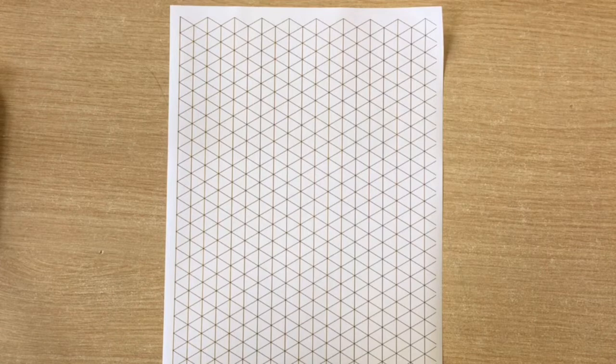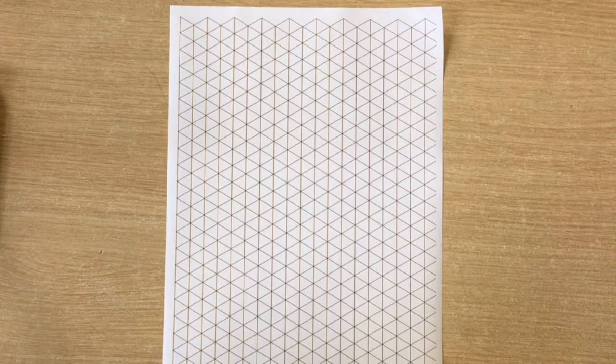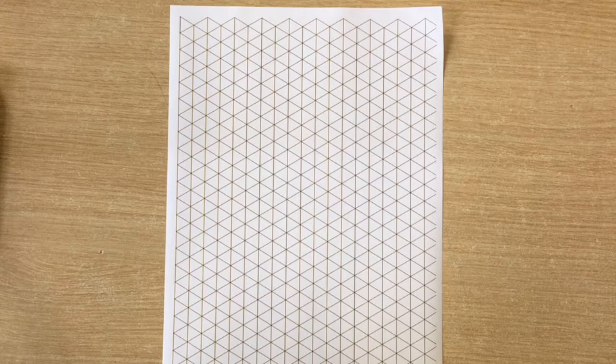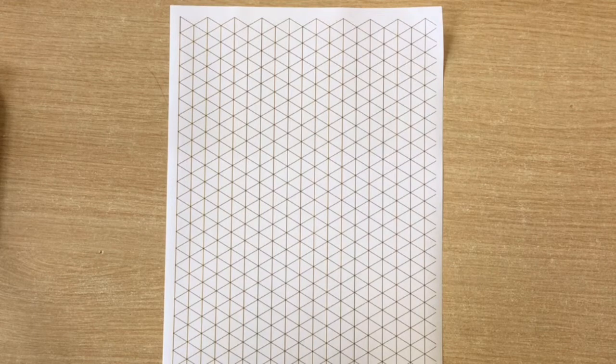For your homework you need to do four different ideas for this packaging and you need to be able to draw them in isometric accurately. At this stage in year 7 we wouldn't expect you to be able to do that without a little help.